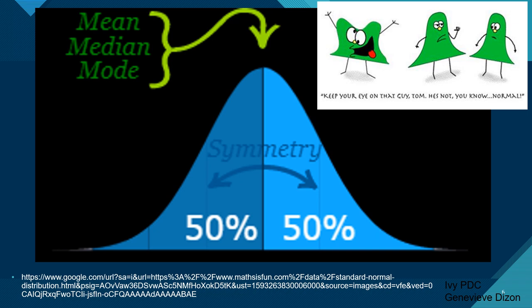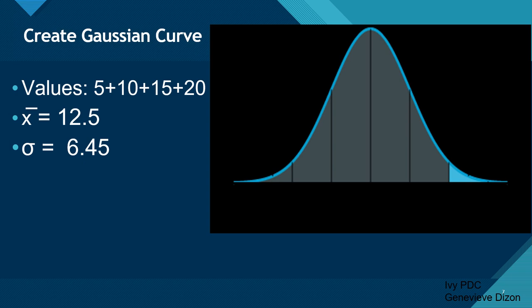This is the normal distribution — the Gaussian curve that our results should be giving. When we have this perfect curve, the mean equals the median, and the median equals the mode, so all three measures of central tendency are in the middle. A normal perfect curve represents symmetry about the center, meaning 50% of the values are less than the mean and 50% are greater. This is what we want to achieve with our quality control.